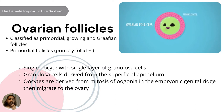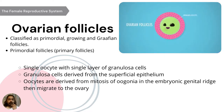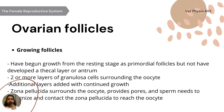The ovarian follicles are classified as primordial, growing, and Graafian follicles. The primordial follicles are the primary follicles. They have a single oocyte with a single layer of granulosa cells, which are derived from the superficial epithelium. Oocytes are derived from mitosis of oogonia in the embryonic genital ridge that migrate into the ovary. In the growing follicles, they have begun to grow from the resting stage as primordial follicles but have not developed a thecal layer or antrum. Two or more layers of granulosa cells surround the oocyte, with additional layers added with continued growth. The zona pellucida surrounds the oocyte and provides pores; sperm needs to recognize and contact the zona pellucida to reach the oocyte.